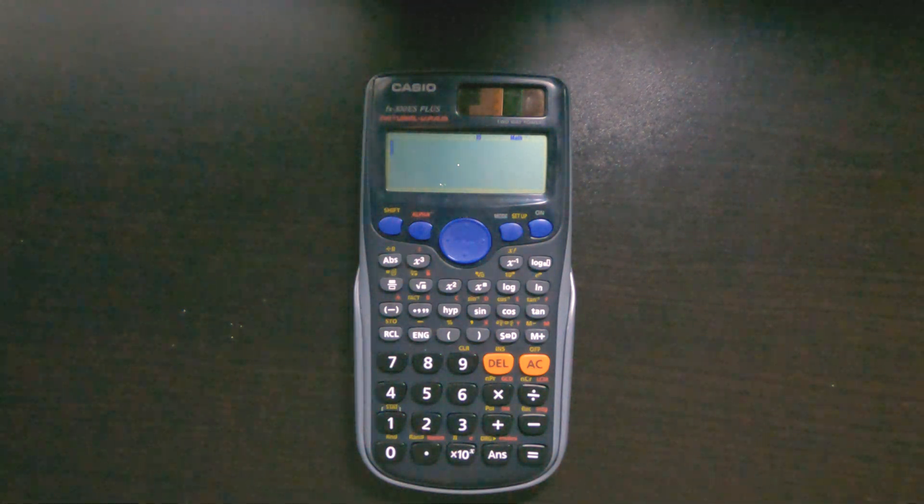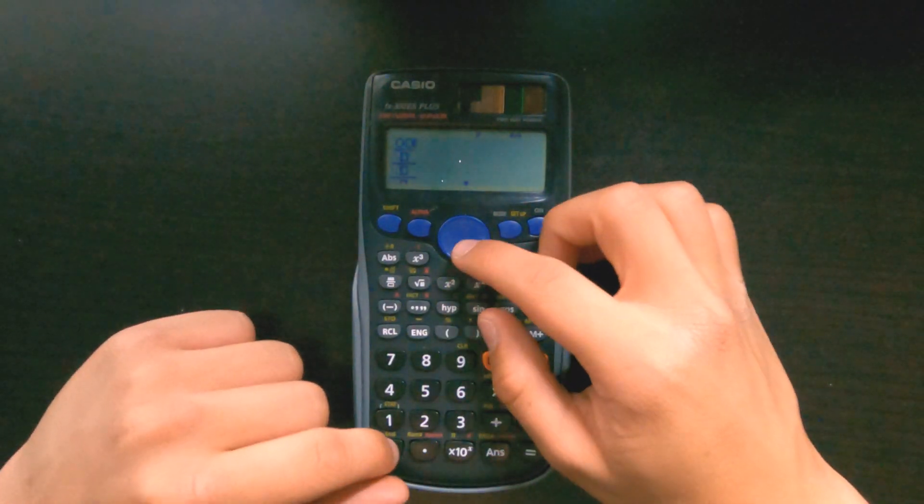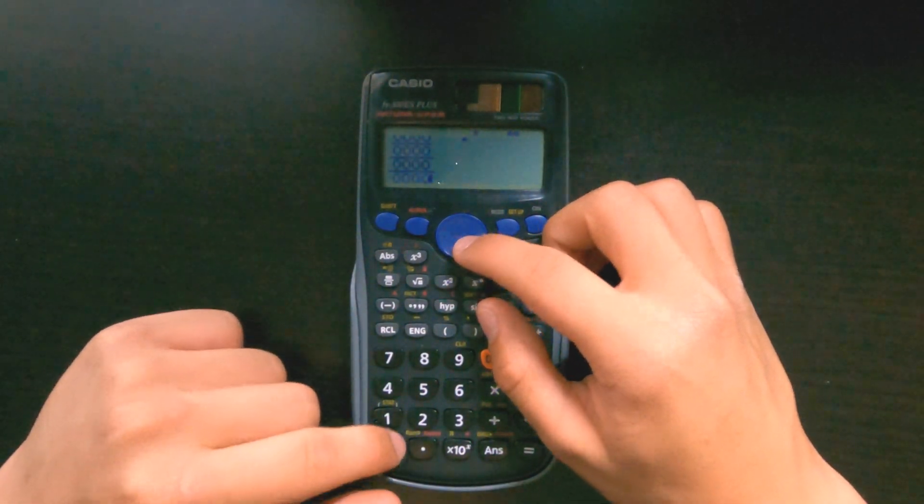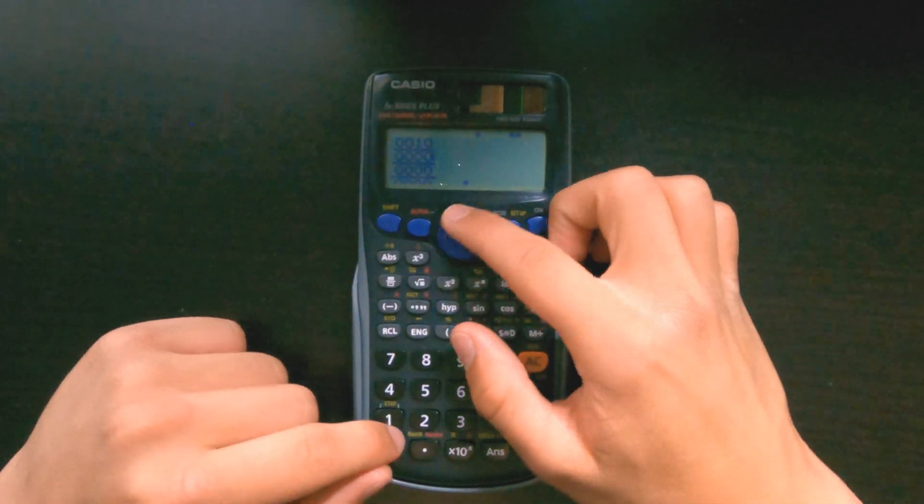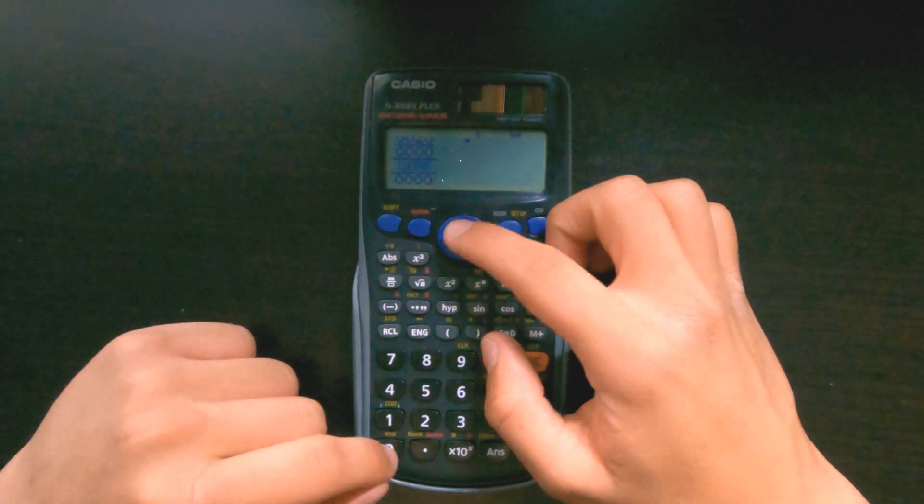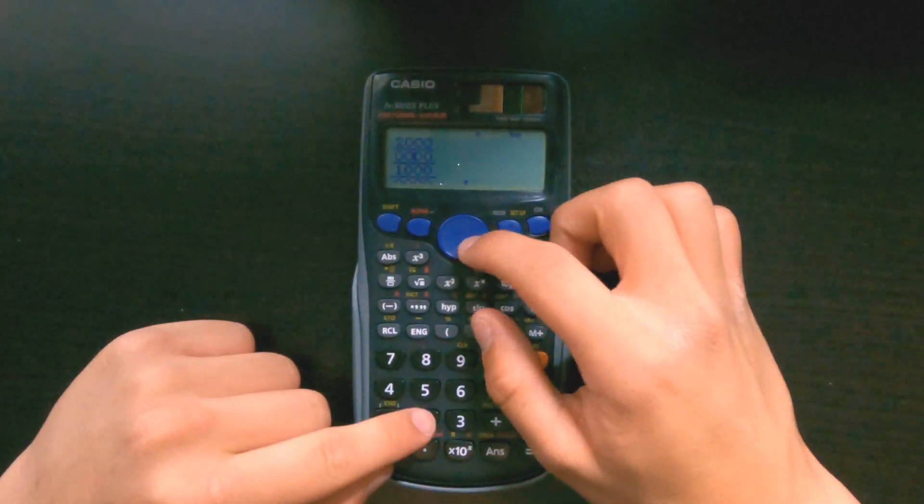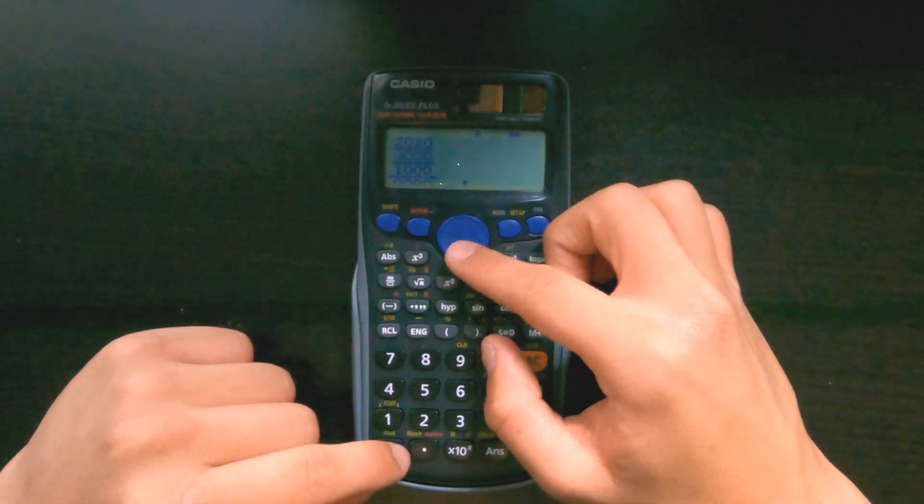For our last game today, 10 is the calculator version of 2048. Instead of numbers doubling when they merge, they go up by one until you reach a value of 10 to win the game. To start, make a 4x4 grid filled with zeros and insert two ones in random spots on the board. On each turn, pick a direction for the numbers to slide in, then alternate between inserting a 1 or a 2 in the center tiles of the board.